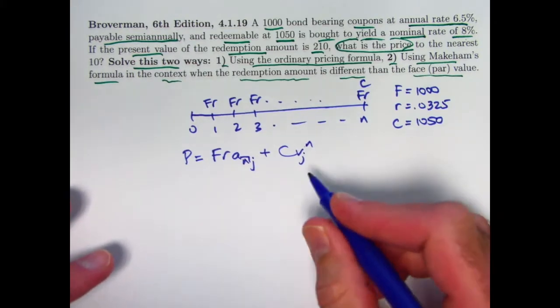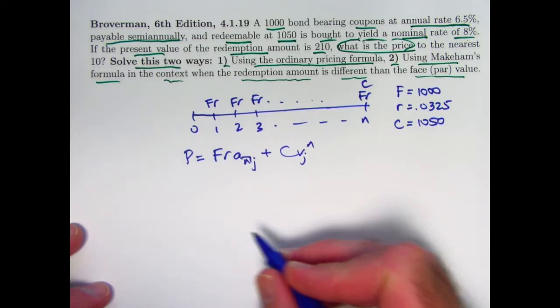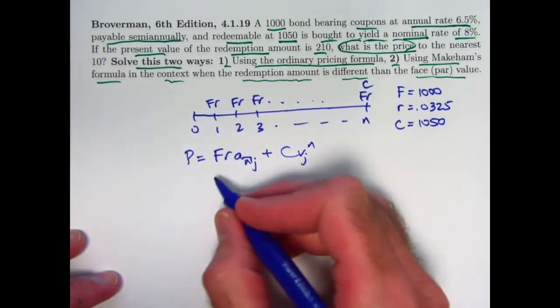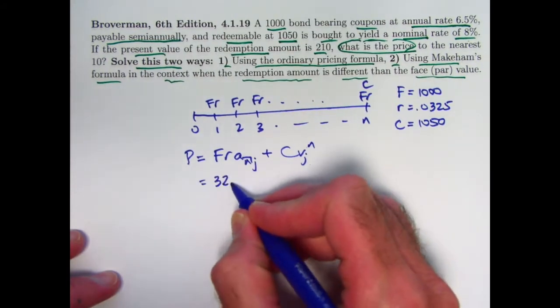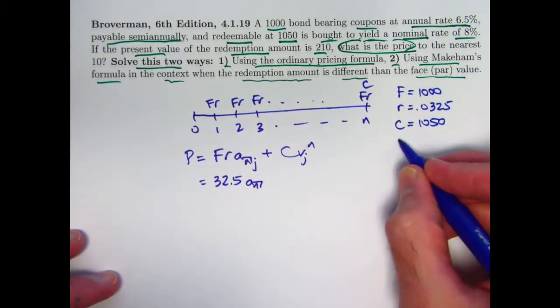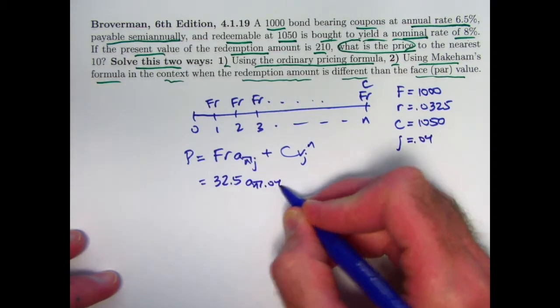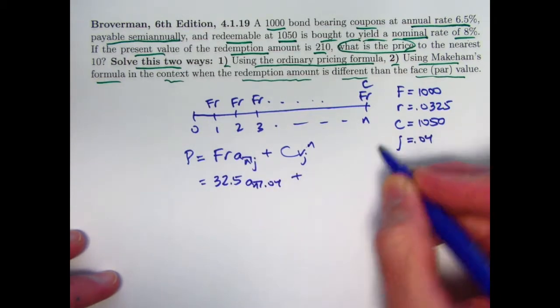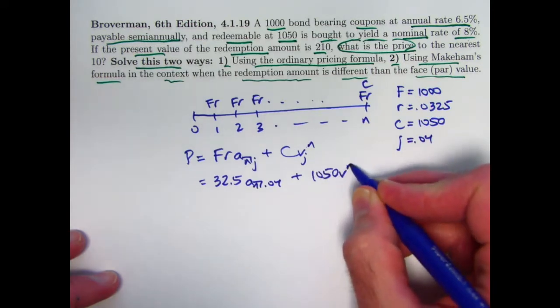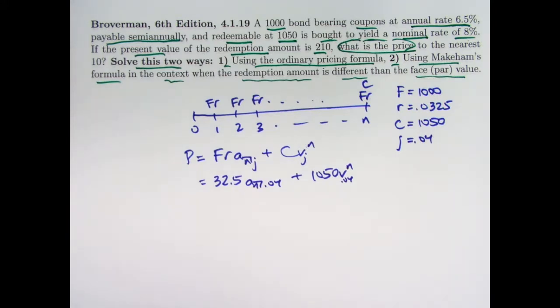We don't know N, so we're going to have to find V to the N to help us solve the problem. We do know F times R would be 32.5. And we know what J is. J is 0.04. We know C is 1,050. To help us finish this problem, we're going to need to figure out what V to the N is.